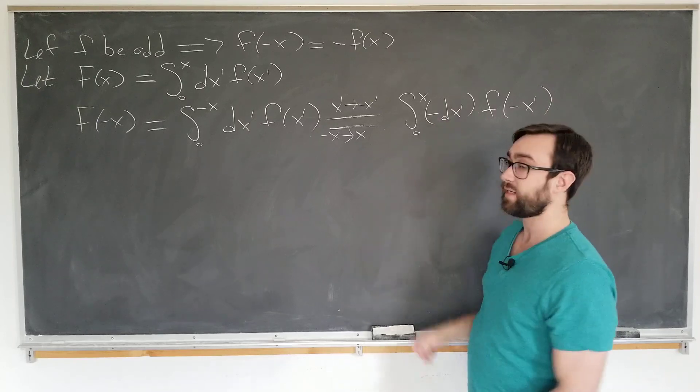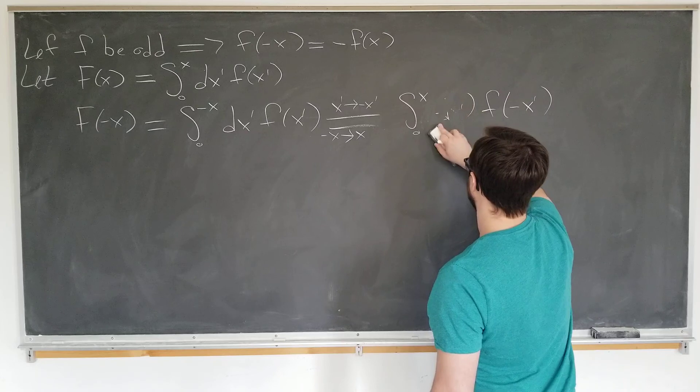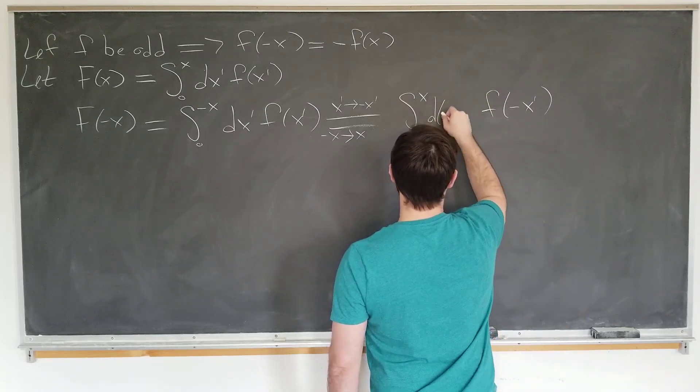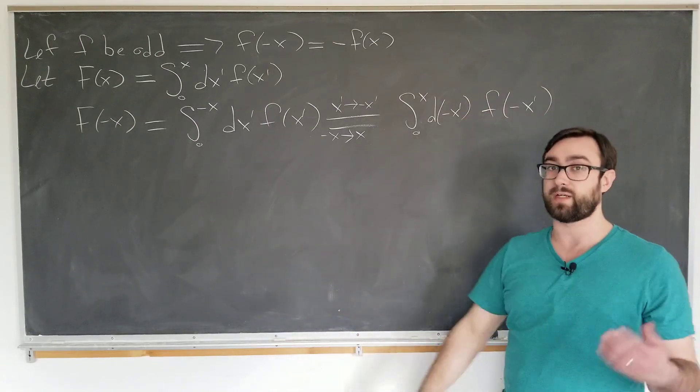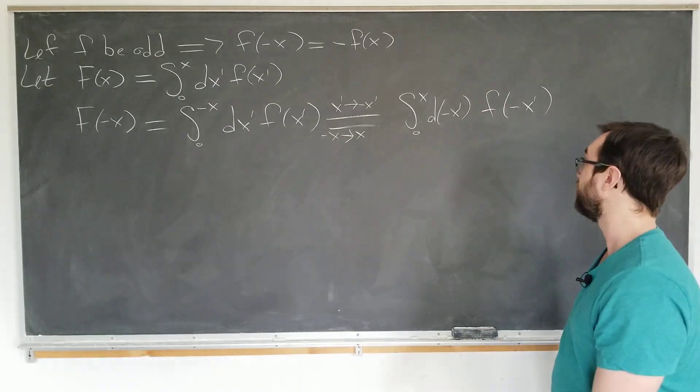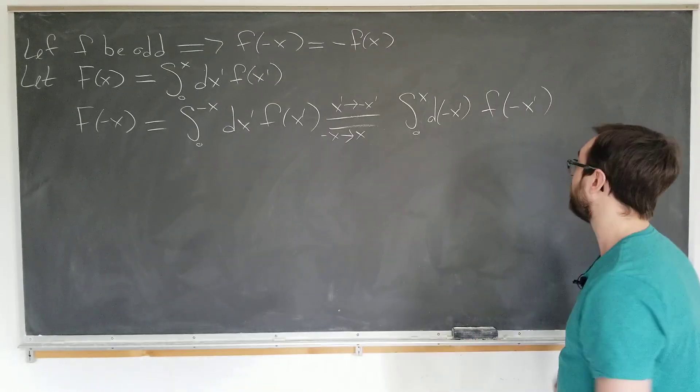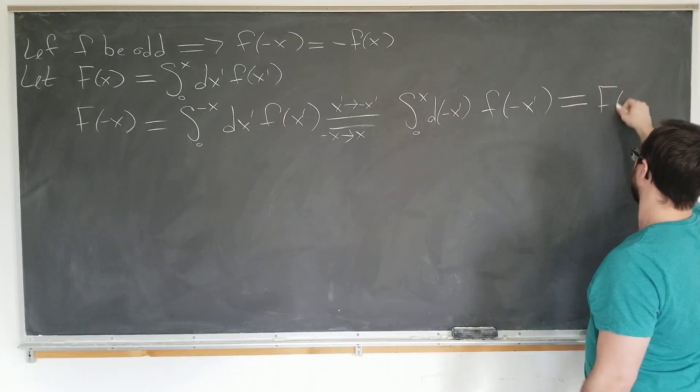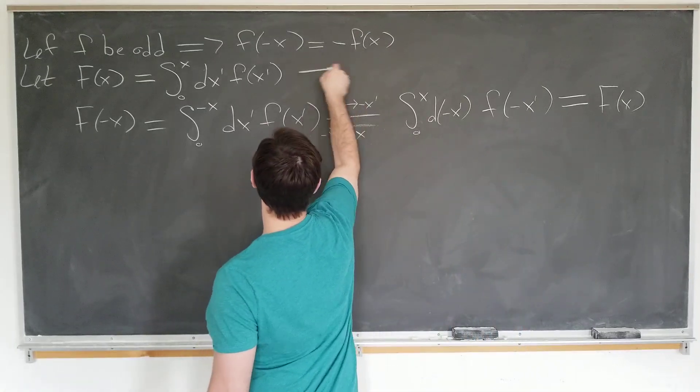Well, this can just be written as d minus x prime, since the minus sign can be distributed. And there we have the original function here, which we would make an implicit change of variables, x prime goes to minus x prime again, going back. But we can simply recognize this as F of x. So this tells us that F is even.